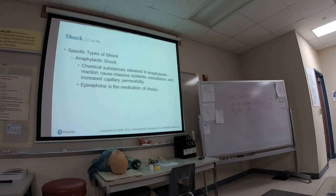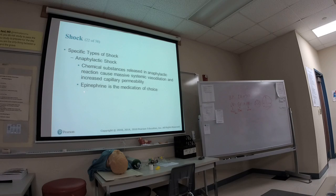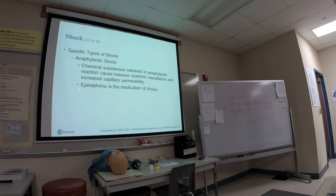Anaphylactic shock occurs when someone is allergic to something — bees, peanuts, for example. The same process happens as in other distributive shocks: no fluid loss, just loss of vessel tone causing massive vasodilation. The treatment involves epinephrine — like an EpiPen — which causes vasoconstriction and bronchodilation, which is what you give in anaphylactic reaction or shock.